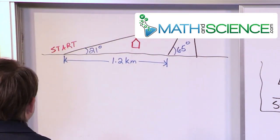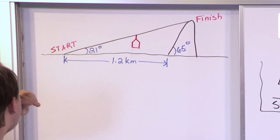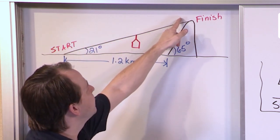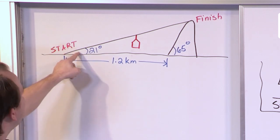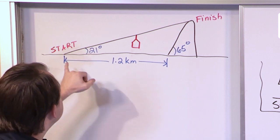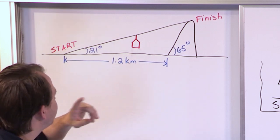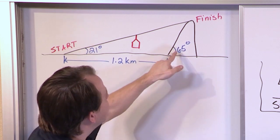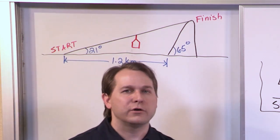Here is a drawing that you'll frequently encounter in problems like this. You have something like a cable car or a ski lift. It starts from the ground and goes along a wire up to the top of the mountain. The angle that the wire makes with the ground is 21 degrees. The distance from the start to the base of the mountain is 1.2 kilometers. The angle between the slope of the mountain and the ground is 65 degrees. The question is: how far does the cable car travel from start to finish?